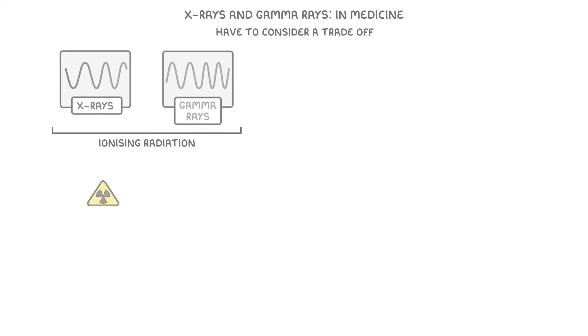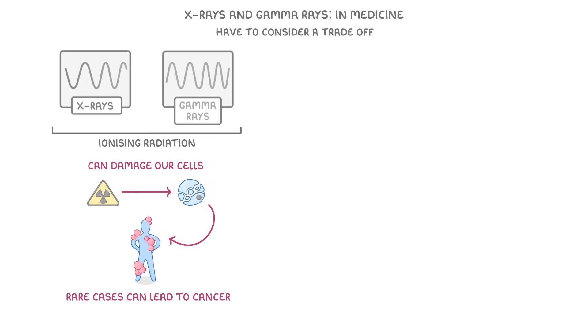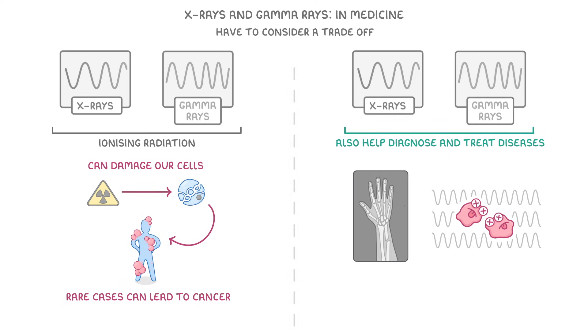Whenever we use X-rays and gamma rays in medicine, we always have to consider a trade-off. Both of them are types of ionizing radiation which can damage our cells, and in rare cases lead to cancer. However, they also help us to diagnose and treat diseases, so it's often worth the risk. It just means that we have to weigh up the pros and cons for each individual case.